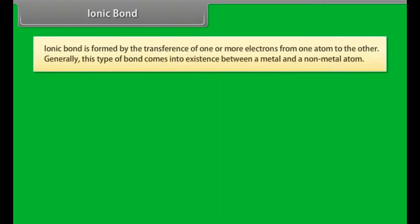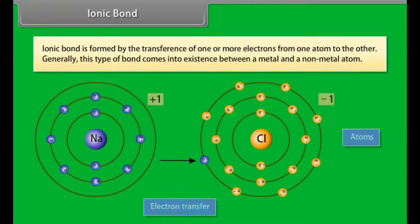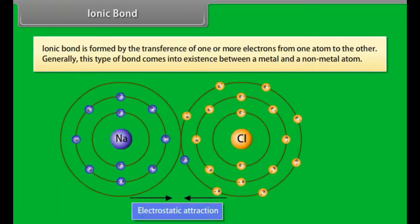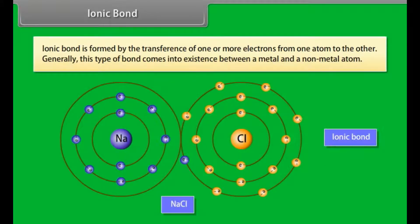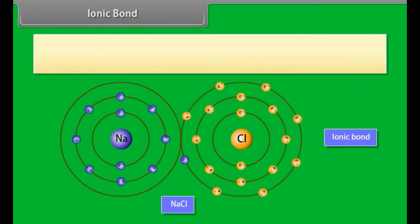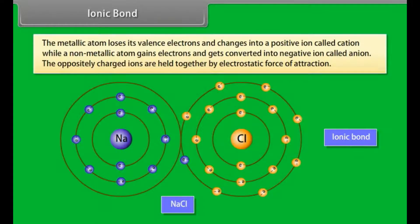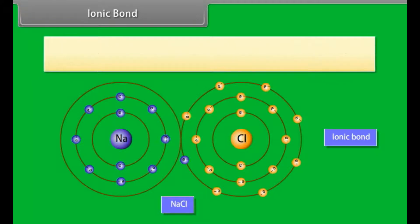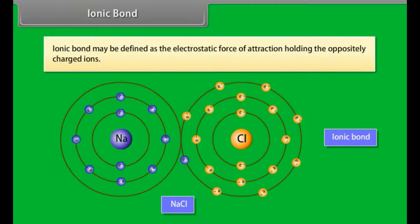Ionic bond. Ionic bond is formed by the transference of one or more electrons from one atom to the other. Generally, this type of bond comes into existence between a metal and a non-metal atom. The metallic atom loses its valency electrons and changes into a positive ion called cation, while a non-metallic atom gains electrons and gets converted into a negative ion called anion. The oppositely charged ions are held together by electrostatic force of attraction. Ionic bond may be defined as the electrostatic force of attraction holding the oppositely charged ions.